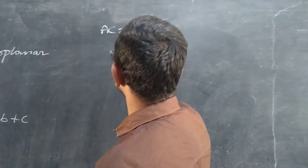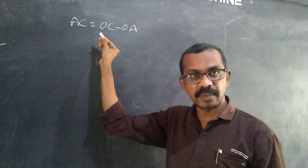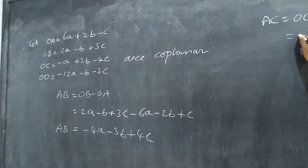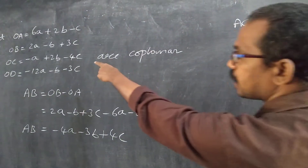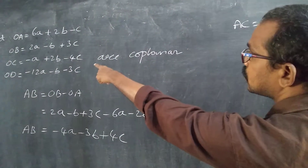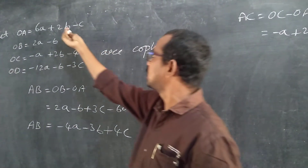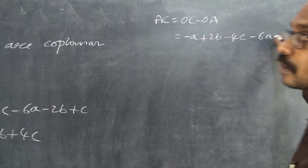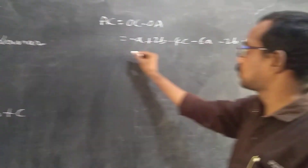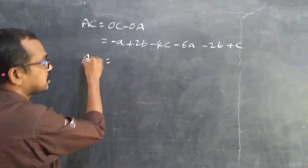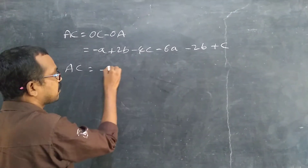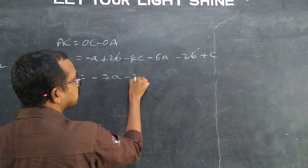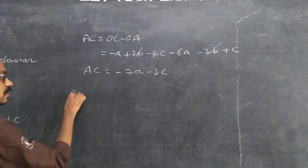Next, find AC. AC equals OC minus OA. OC is minus a plus 2b minus 4c, minus OA which is 6a plus 2b minus c, signs change to minus 6a minus 2b plus c. So AC equals: minus a minus 6a = minus 7a, 2b minus 2b = 0 (cancelled), minus 4c plus c = minus 3c. Therefore AC equals minus 7a plus 0b minus 3c.